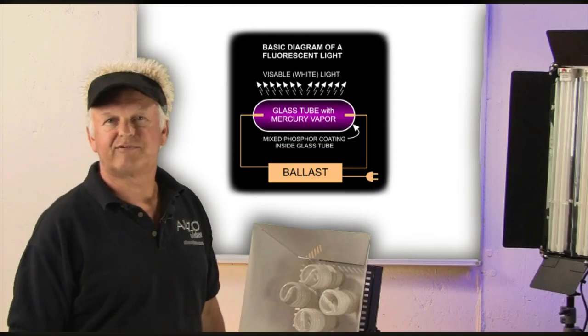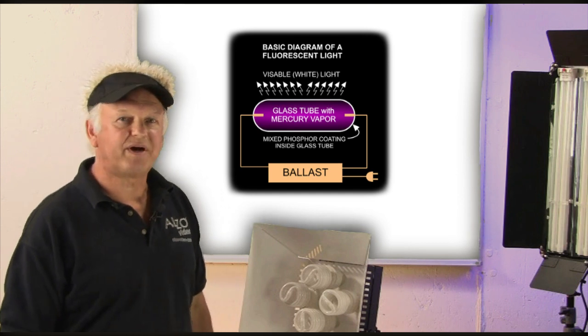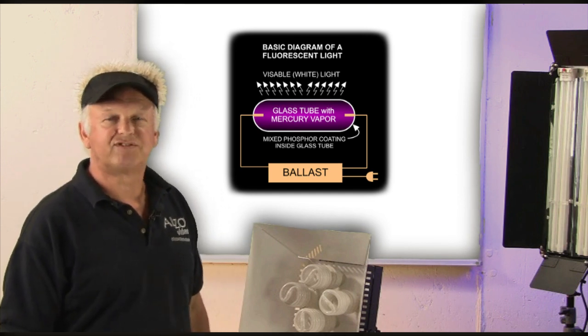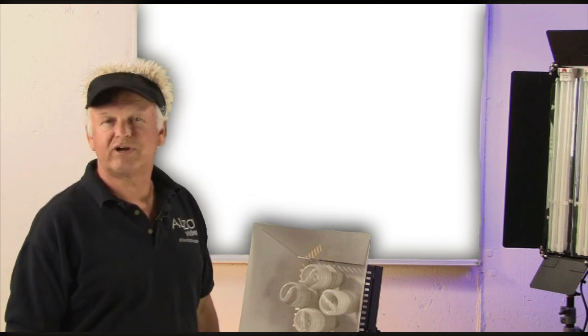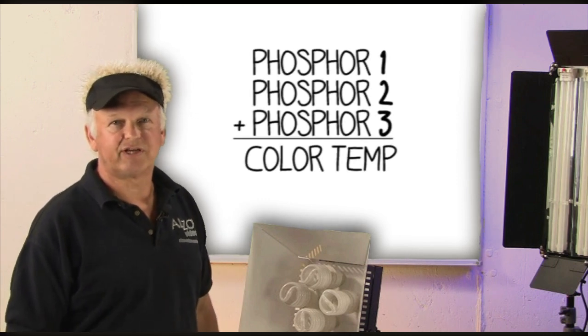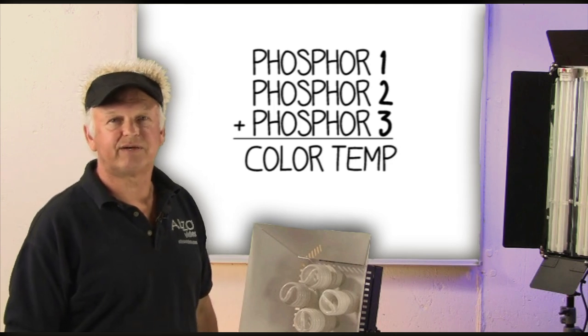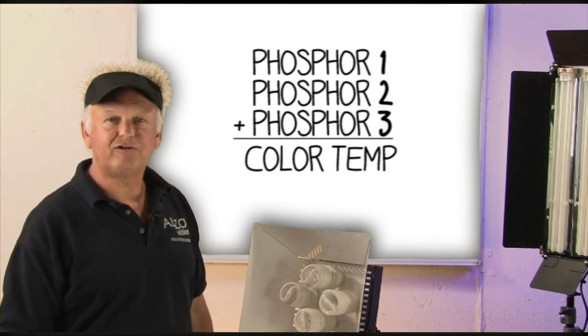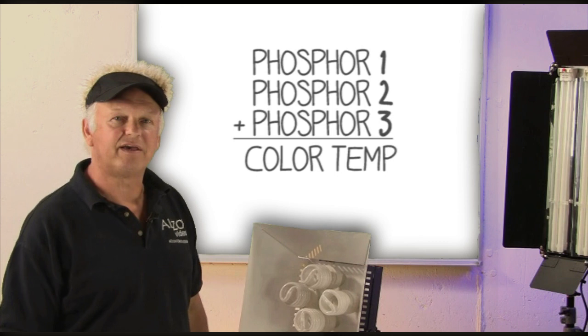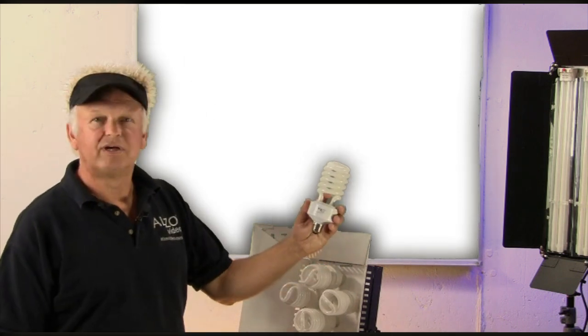The color of light produced by a fluorescent light is determined by the chemical mixing of selected phosphors where each phosphor is responsible for selected colors. Because of this art, there are many color temperatures available today including daylight 5600K as with this Alzo compact fluorescent.